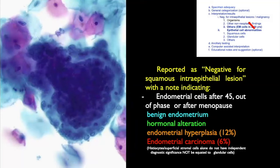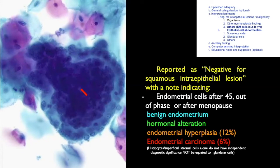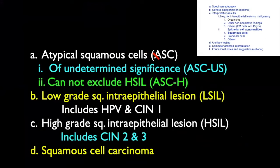Now we are talking about endometrial cells in the third compartment — negative for intraepithelial lesions. The peripheral cells are epithelial cells and the central ball contains stromal cells — this is known as 'exodus,' predominantly seen in menstrual endometrium. You can occasionally see them in non-menstrual periods in women under 45 years of age. But when you see endometrial cells in women over 45 years of age, you must think of hyperplasia or carcinoma and investigate.